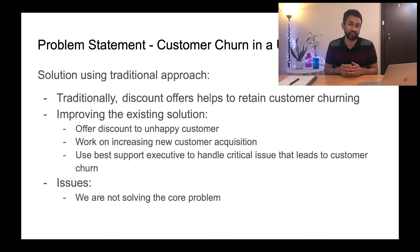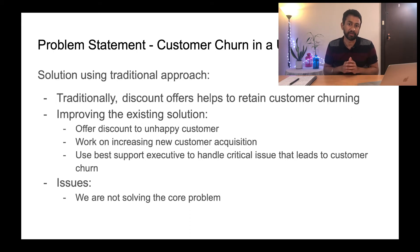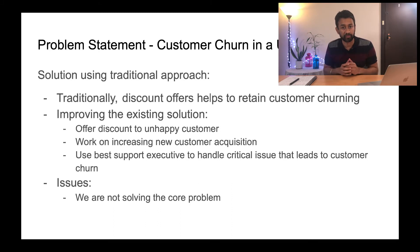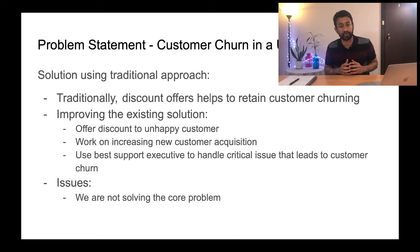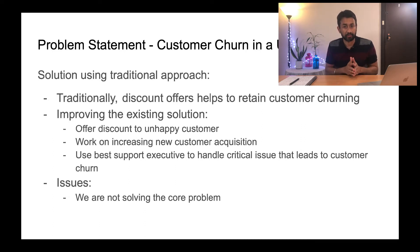Using the traditional approach, we start with an assumption — for example, we have identified that customers who are about to churn, when given a counter offer or a discount offer, are mostly retained. So what we try to do is build various solutions around it. We identify customers who are likely to churn by analyzing complaint data, understanding the various complaints leading to churn, and when a customer makes a complaint, we offer them a discount so they will not churn.